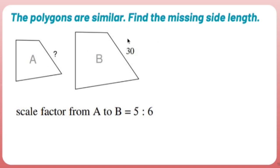Whenever I'm asked to find the missing side length of similar polygons, whether it's triangles or in this case a quadrilateral, the rules don't change.